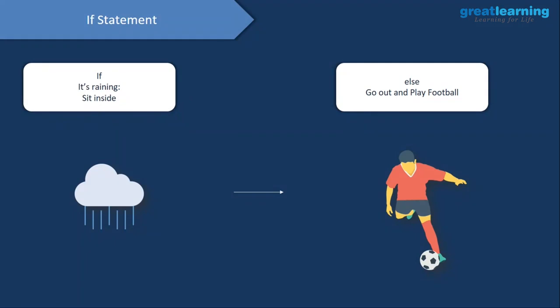Now let's understand flow control statements. The first is the 'if' statement, a decision-making statement. In real life, there are scenarios where we make decisions. For example, if it's raining outside, you can't go out and play football — you have to stay inside. But if it's not raining, you can happily go out and play. This is the if-else logic.